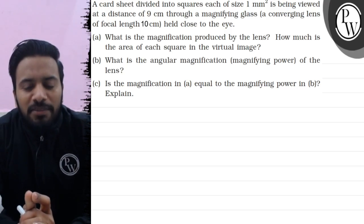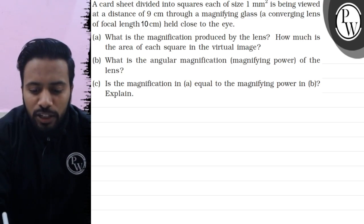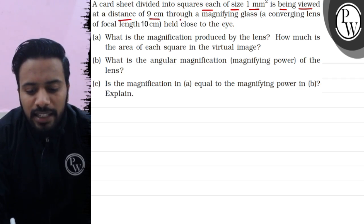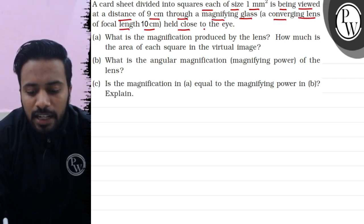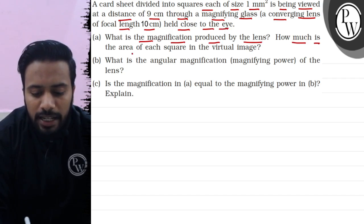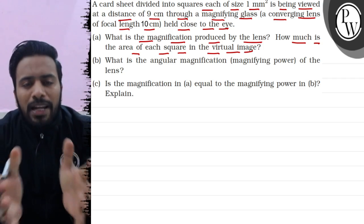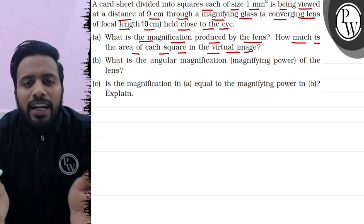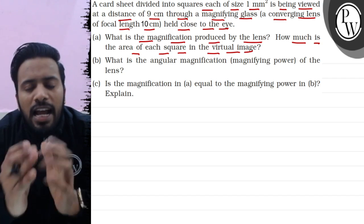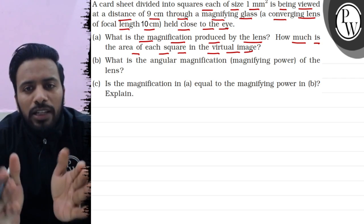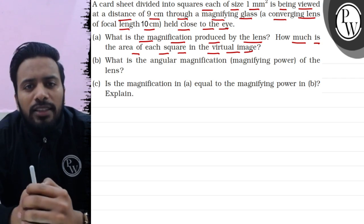Hello students, let's see this question. A card sheet divided into squares, each of size 1 mm square, is being viewed at a distance of 9 cm through a magnifying glass — a converging lens of focal length 10 cm held close to the eye. This question has 3 parts we have to solve. The card sheet has 1 mm square divisions, viewed at 9 cm through a converging lens of focal length 10 cm.